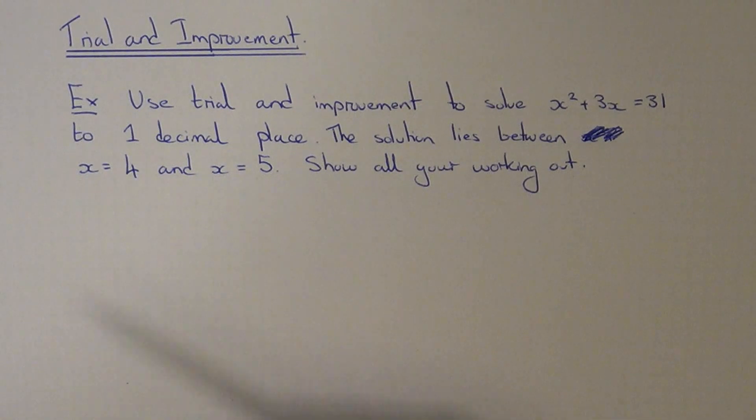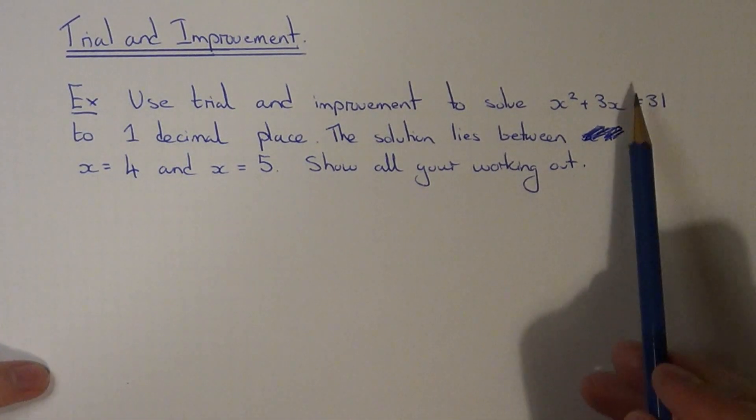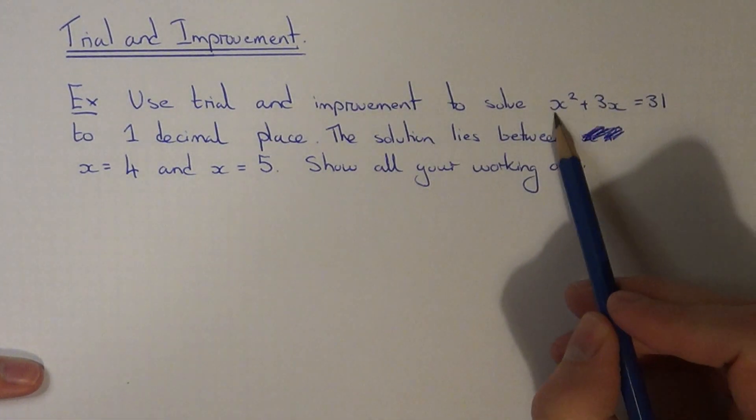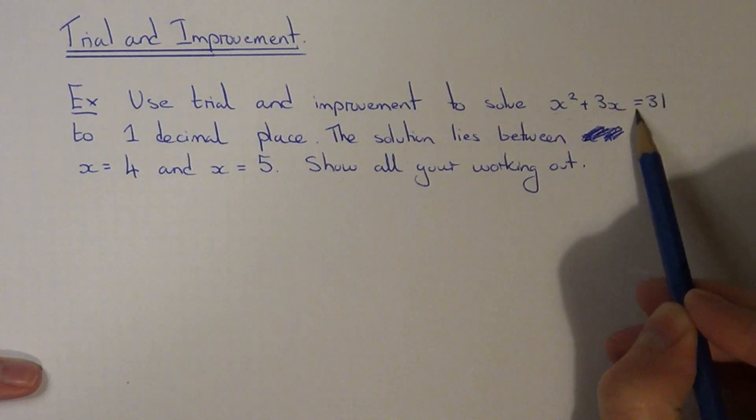So trial improvement is a bit like a guessing method. You substitute your numbers into your equation and we're looking for a value of x which takes us as close as we can to 31.